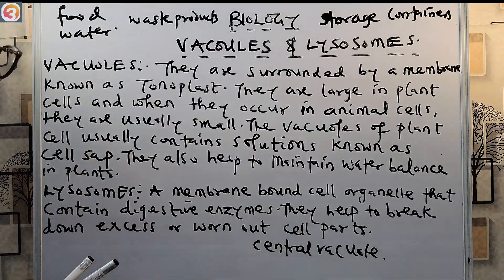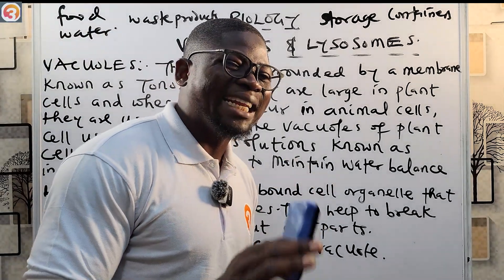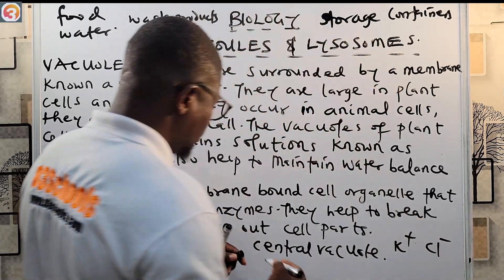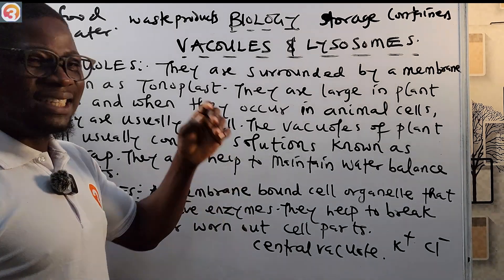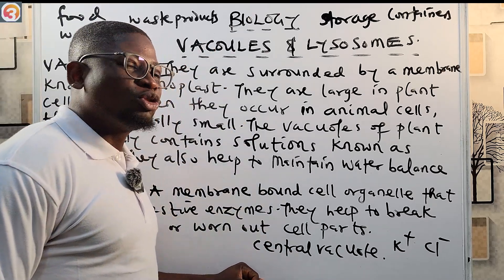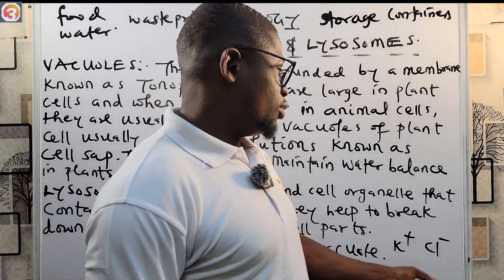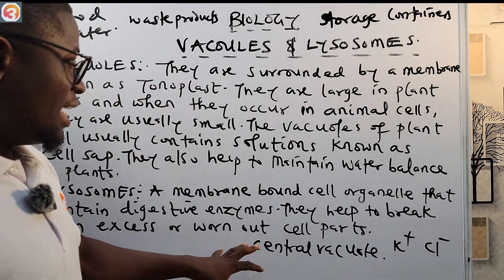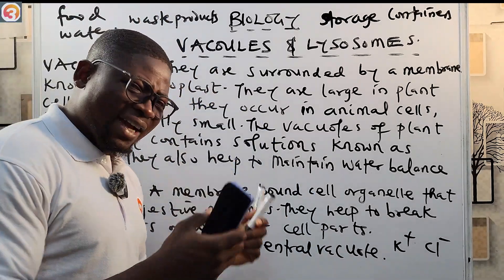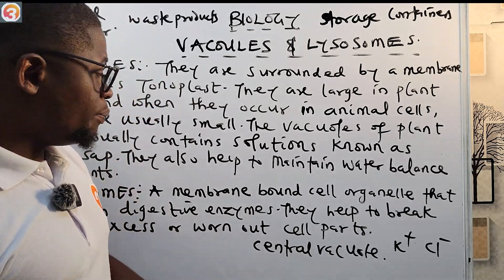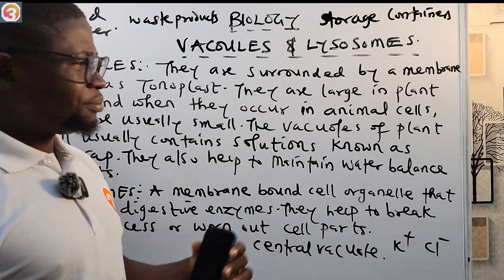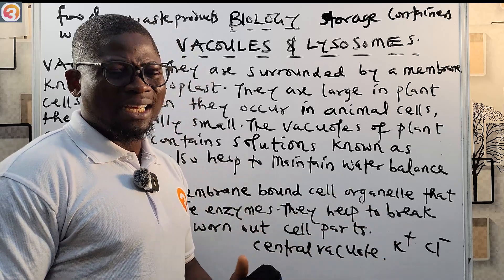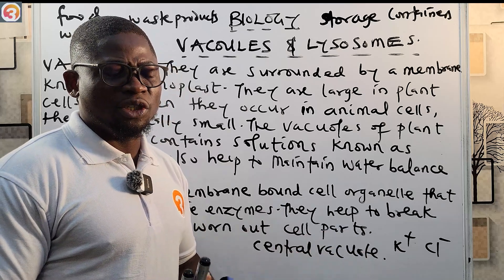The central vacuole is found in plant cells and stores mainly water and inorganic ions like potassium ion (K+) and chlorine ion (Cl-). Only plant cells have a large vacuole like this central vacuole. However, vacuoles are found in both plant and animal cells — while they are more predominant in plant cells, they are sparsely found in animal cells, scattered around the cytoplasm.